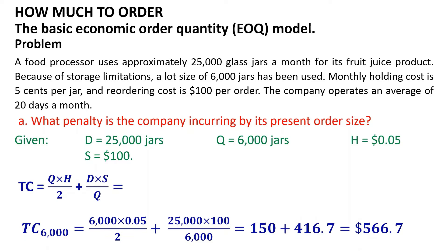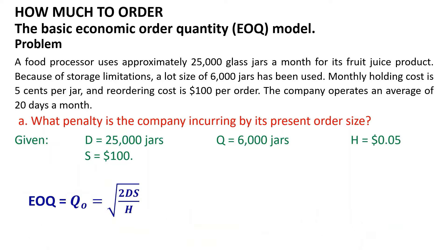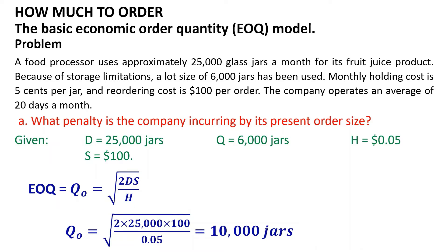The next step is to calculate the economic order quantity Q0. We know that EOQ or Q0 equals the square root of 2 multiplied by D multiplied by S divided by H. Substituting the given values: Q0 equals the square root of 2 multiplied by 25,000 multiplied by 100 divided by 0.05, equal to 10,000 jars.